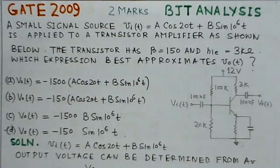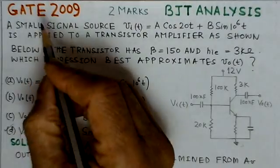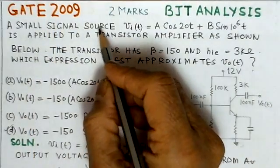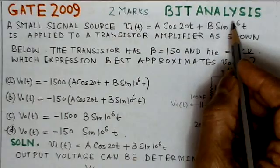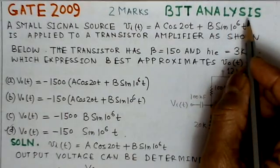This is the second problem on BJT analysis and it is of GATE 2009. This problem is of two marks and basically on BJT analysis.